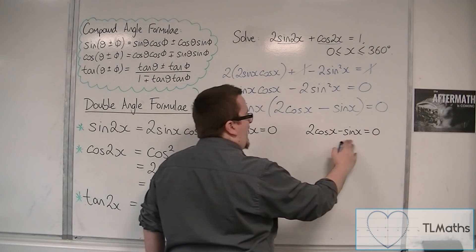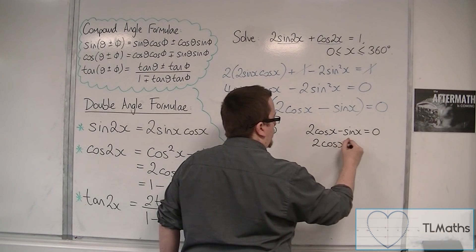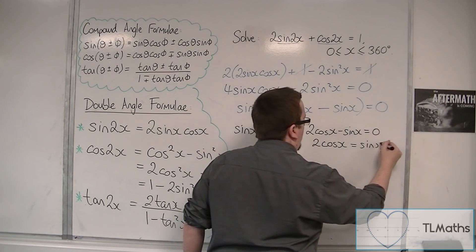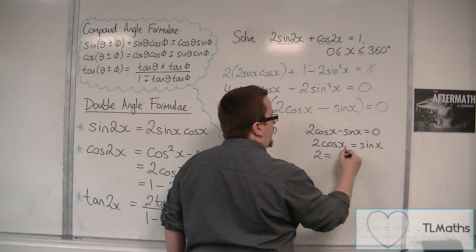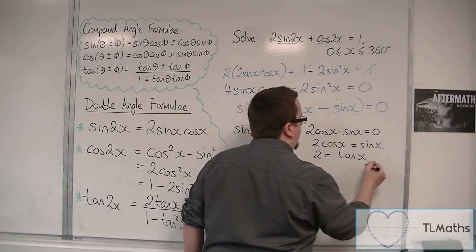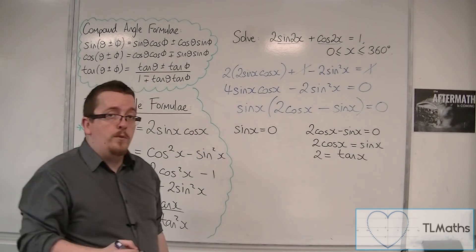Or, 2cos(x) - sin(x) = 0. Now, if this is 0, you can add sin(x) to both sides. And then divide both sides by cos(x). And sin(x) over cos(x) is tan(x). So, we're actually solving these two equations between 0 and 360.